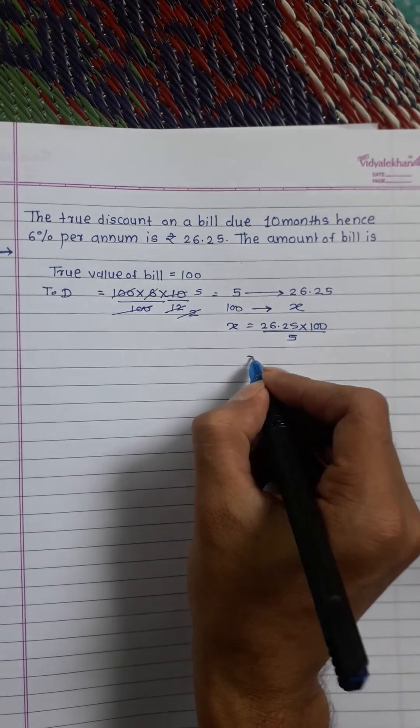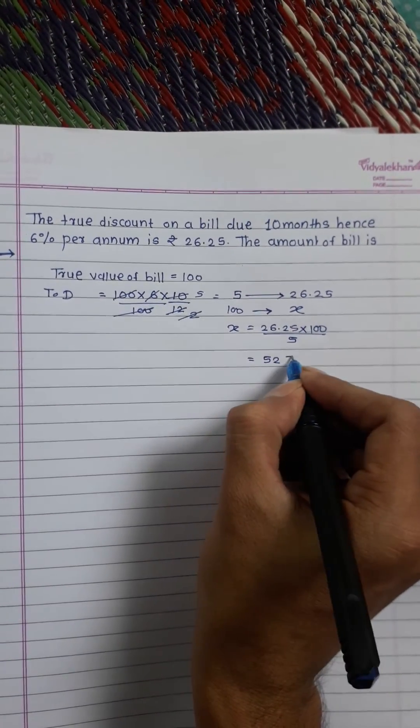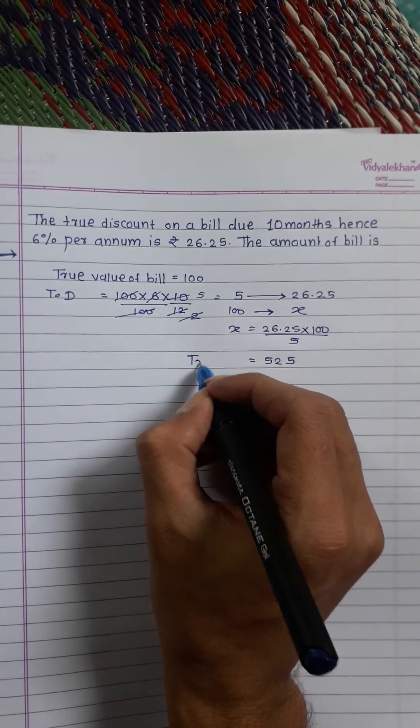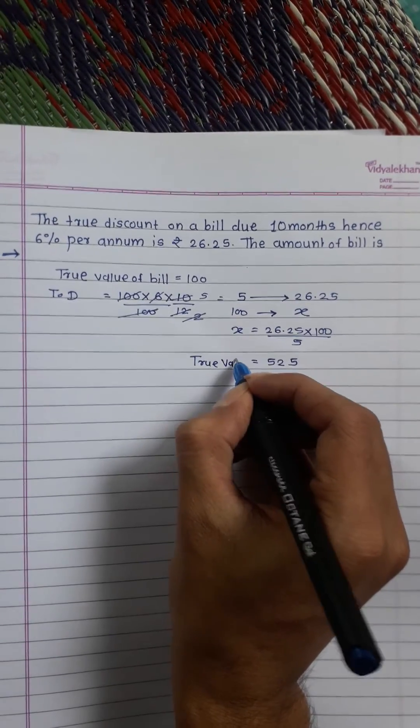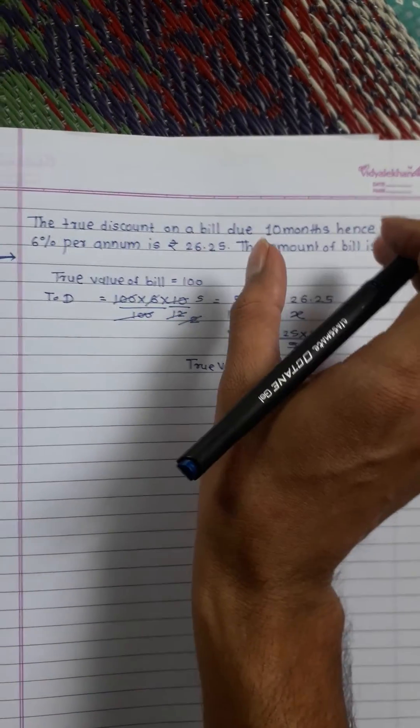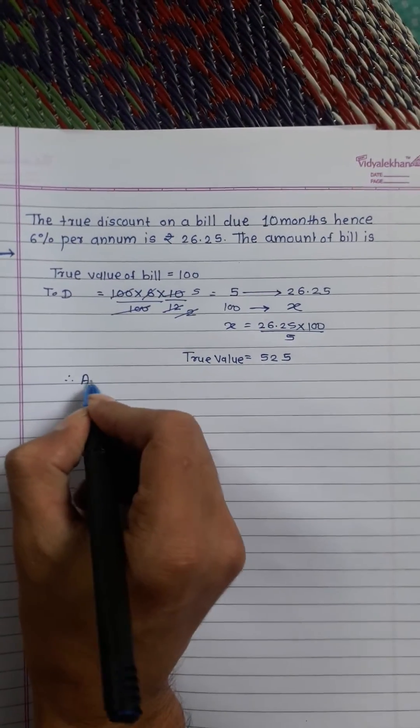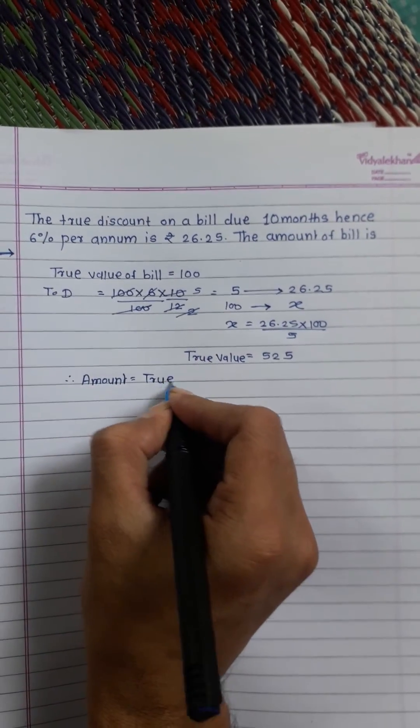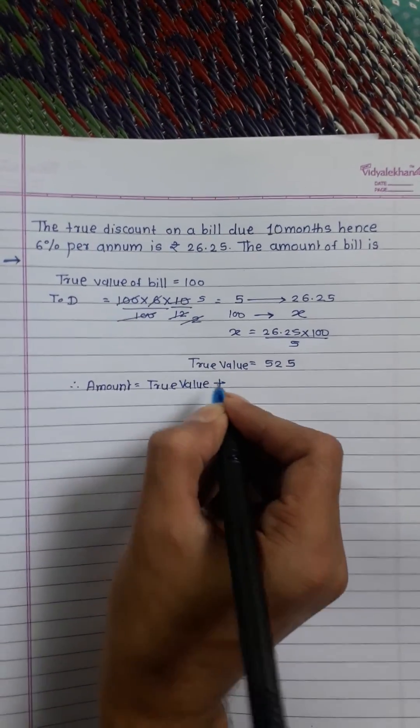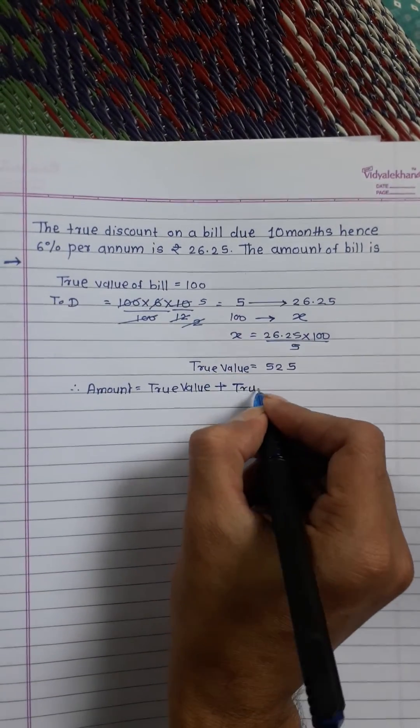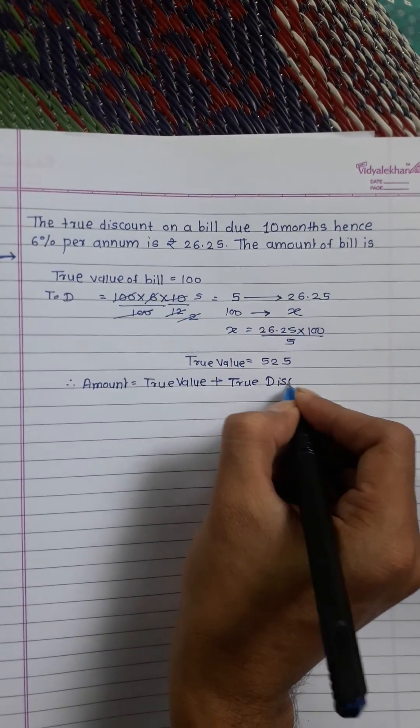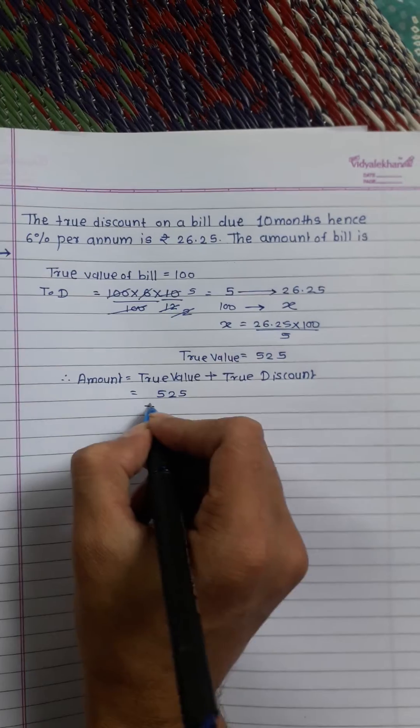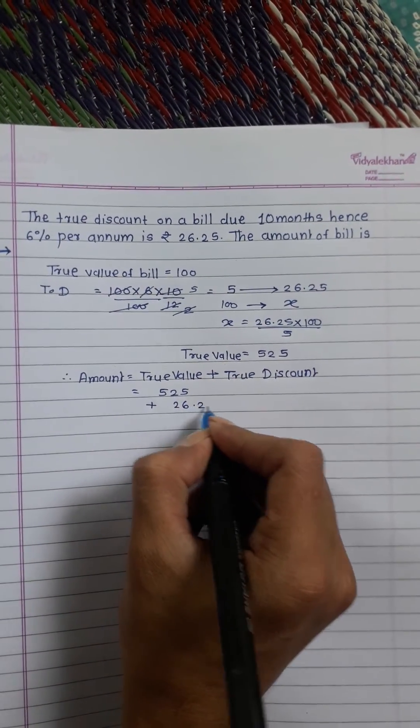But we want to calculate the amount. The amount is equal to true value plus true discount. True value is 525 and true discount is 26.25.